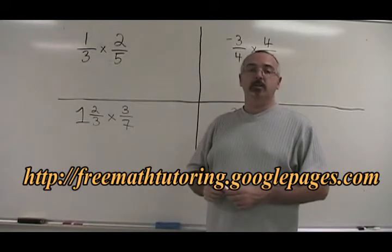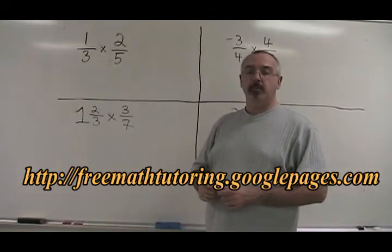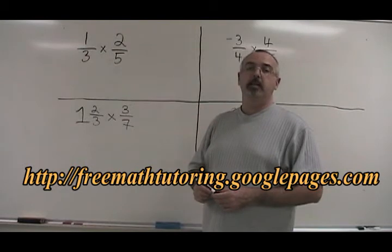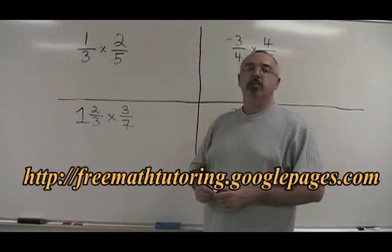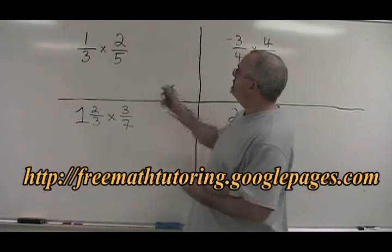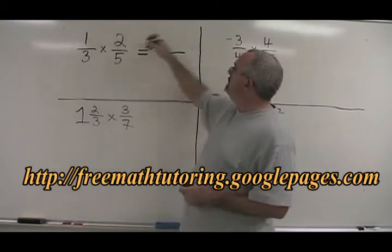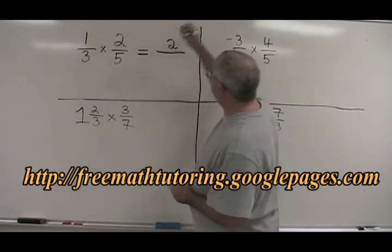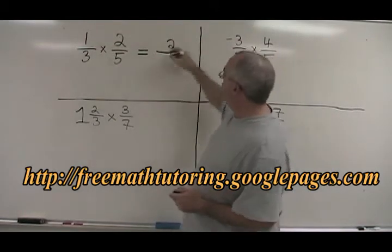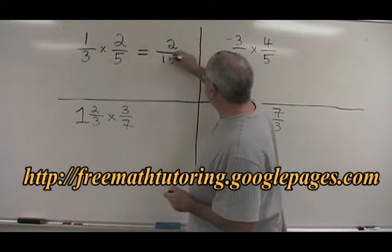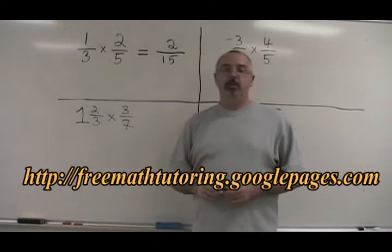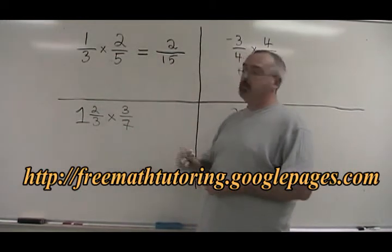Multiplying fractions is quite easy. We have to remember to multiply the numerators to get the answer numerator, and multiply the denominators to get the answer denominator. 1 times 2 is 2. 3 times 5 is 15. So 2 over 15 is the answer to this question.